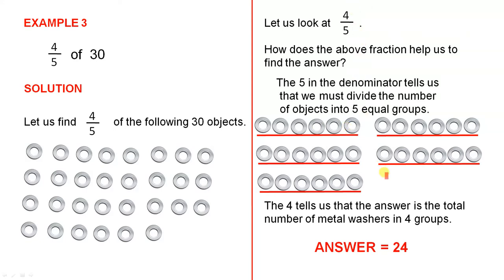What does the 4 tell us? The 4 tells us that the answer is the total number of metal washers in 4 groups. So we have to add the total number of washers in 4 groups. So we'll take this one, plus this one, plus this one, plus this one. Now, if you're very clever and you can add up pretty quickly, instead of going one by one, we can do it this way: 6 plus 6 is 12. If we add another 6, we get 18. And if we add another 6, we get 24. If you like, you can count all of these one by one, and you'll still get 24. So the answer is 24, and basically that is telling us that 4 fifths of 30 equals 24.